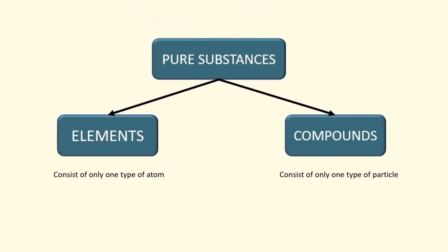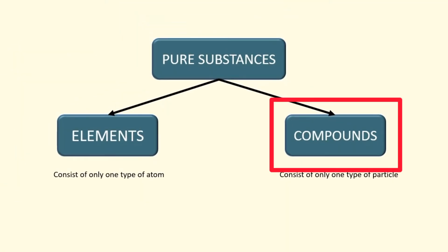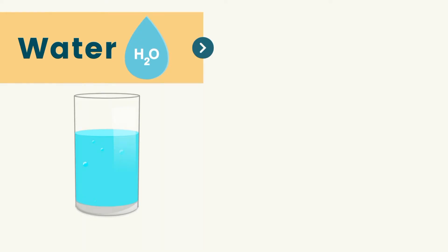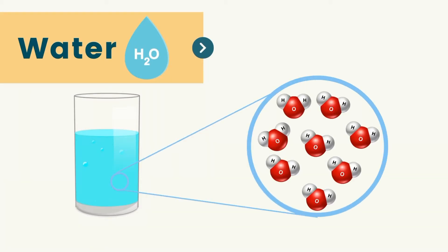Next, we will look at the other type of pure substances, which are compounds. A compound is another type of pure substance that consists of two or more different elements that are chemically combined. I have here a glass of water. Water is a compound with a chemical formula of H₂O. We're going to zoom in on water and look at the particles that make it up. What we see is a little bit different from what we saw with gold and carbon — it is more complex, but what we see is the same basic set of molecules, which are the molecules of water.